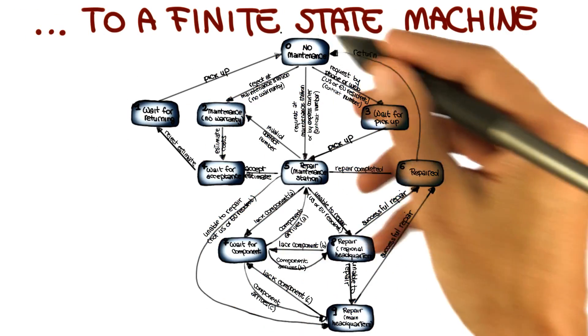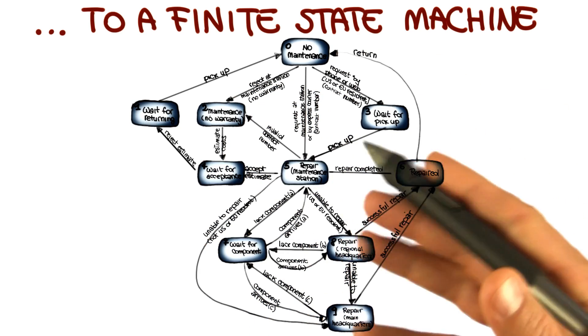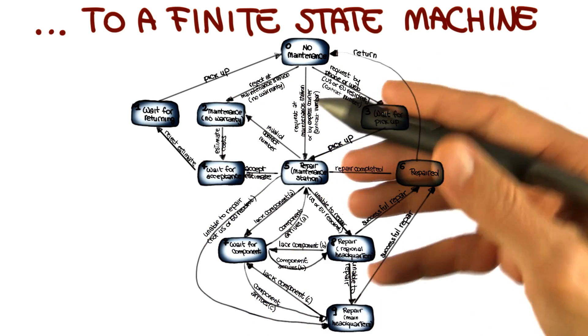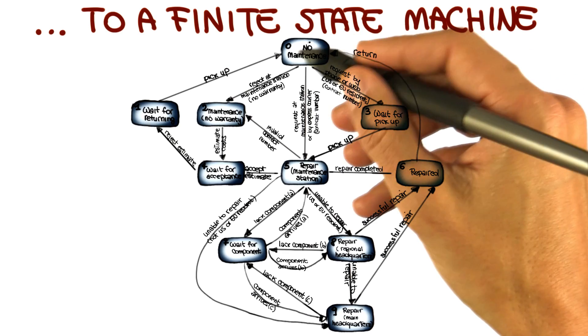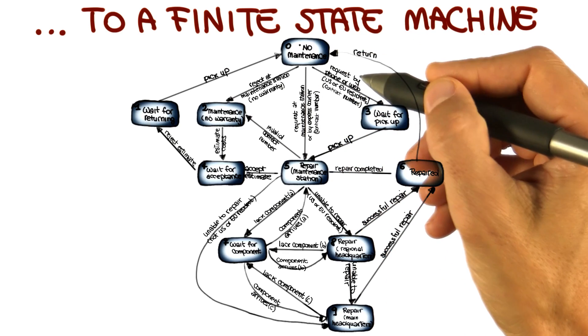For the spec that we just considered, this is the state machine that will result. Again, there is no need to go through all the details. But what I want to point out is that we have a set of states. For instance, we have state zero, which is no maintenance.